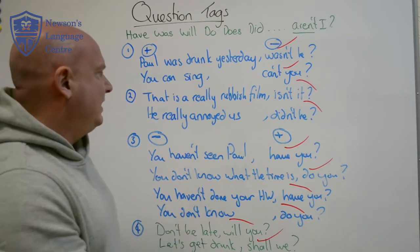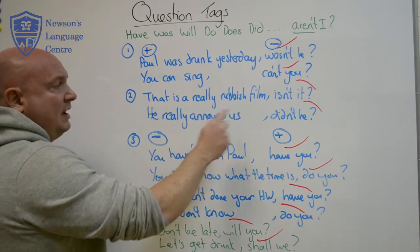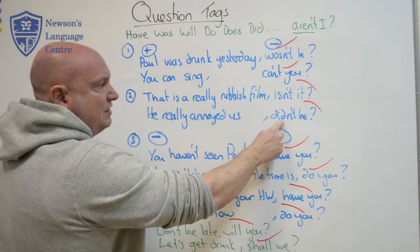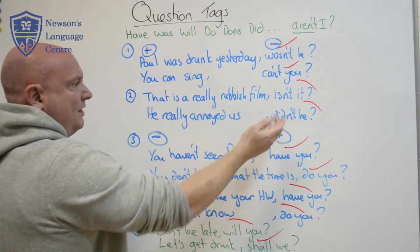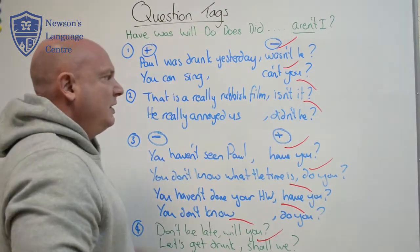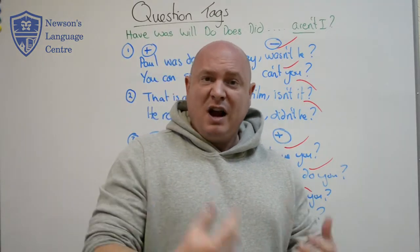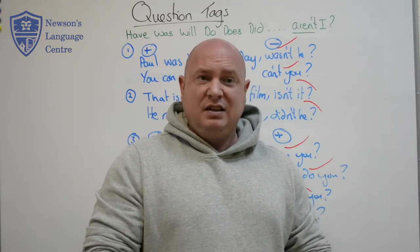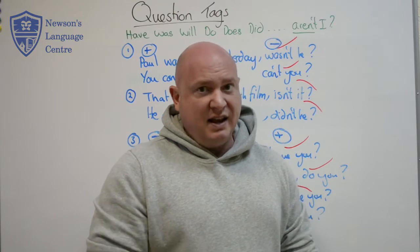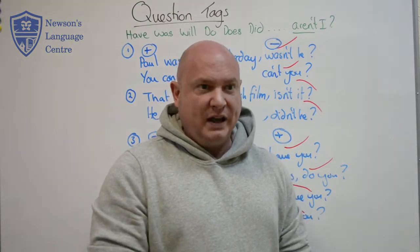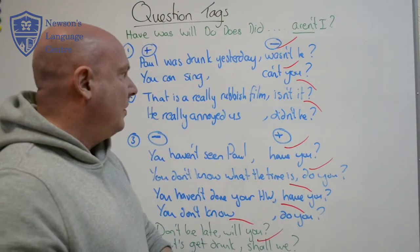'He really annoyed us, didn't he?' — I've got my past simple verb and my past simple auxiliary 'did' or 'didn't.' Again I'm expecting you to agree with me. So imagine Paul really annoyed us: 'He really annoyed us, didn't he?' 'Yes he did, he was really annoying — singing like a chicken that's slowly dying all night long.'